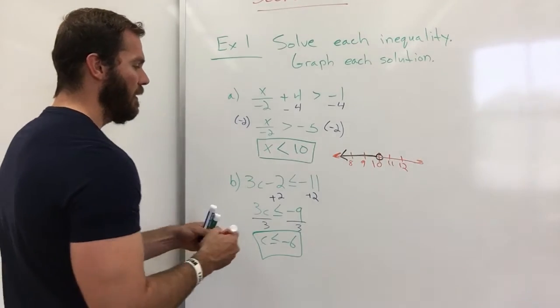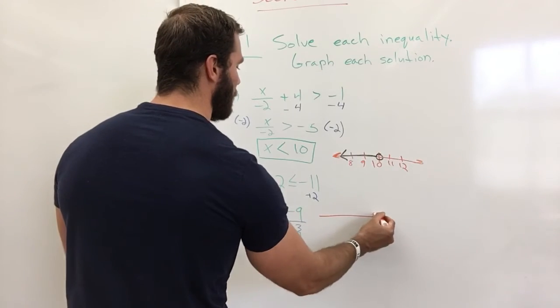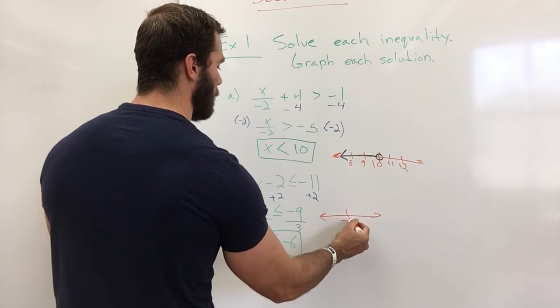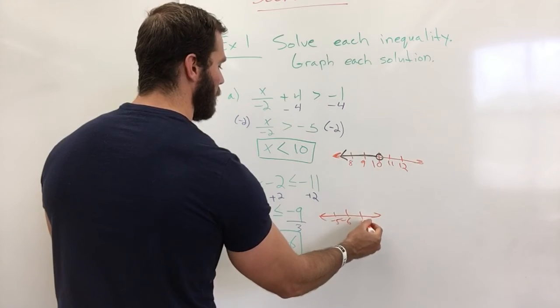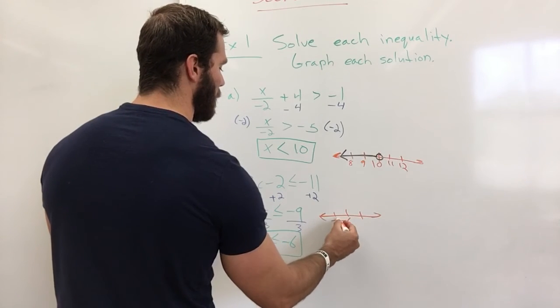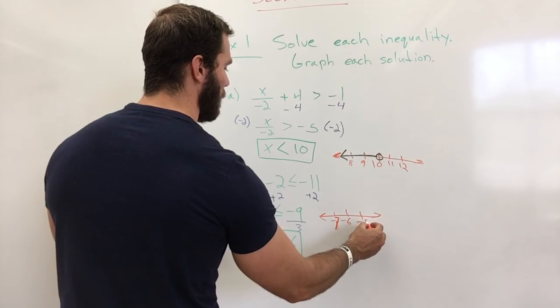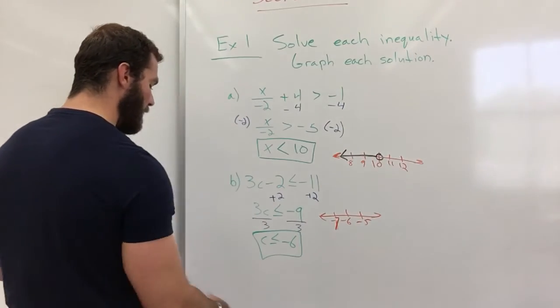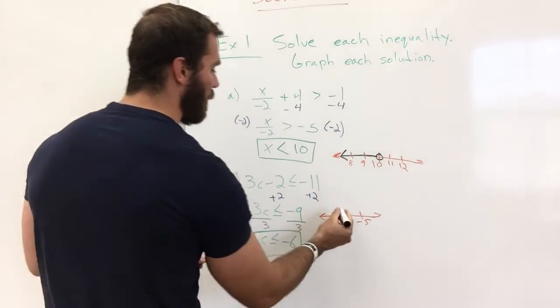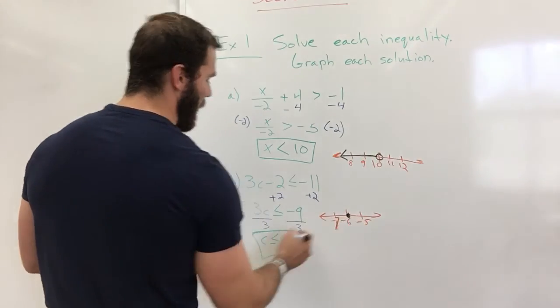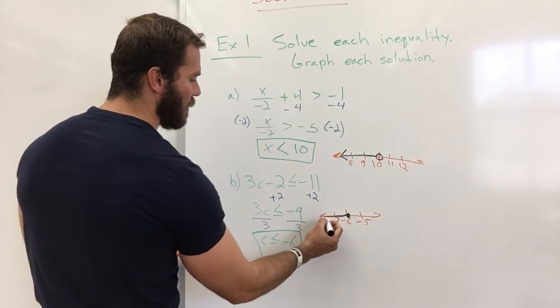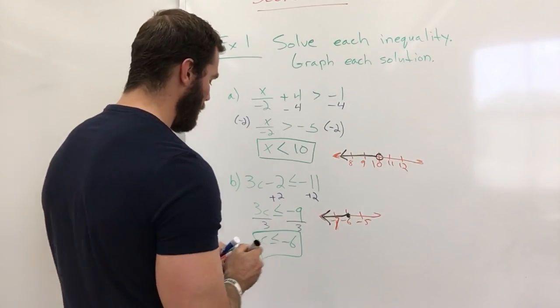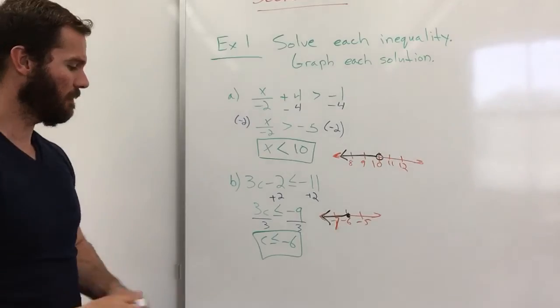Let's go ahead and graph it. It says that it's equal to it, so we're going to have a closed circle. And c is less than, so we're going in the negative direction. Everything is less than.